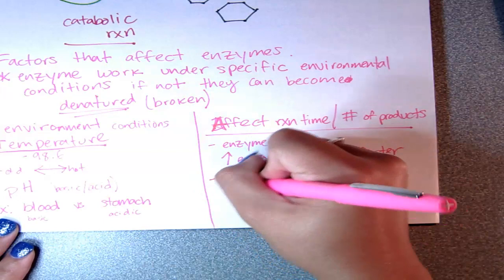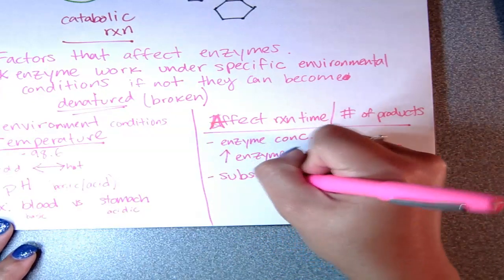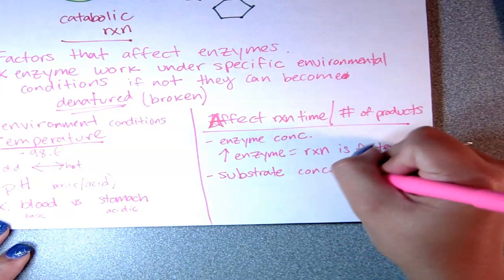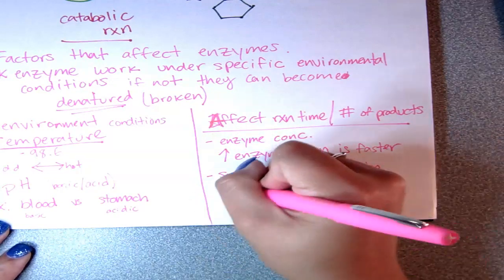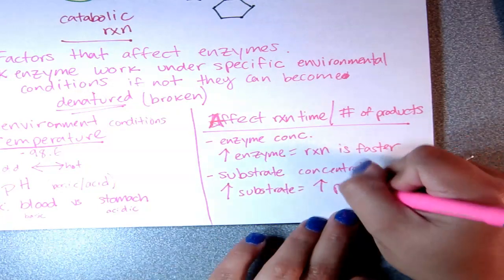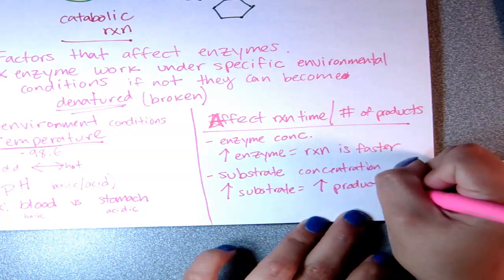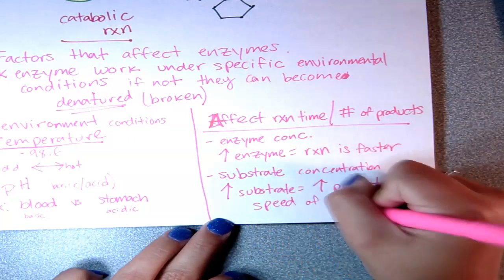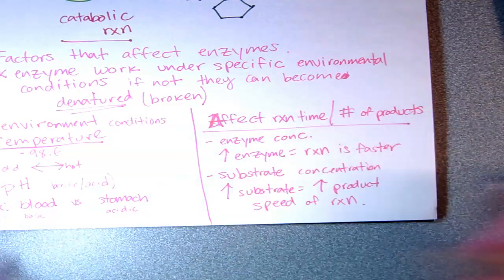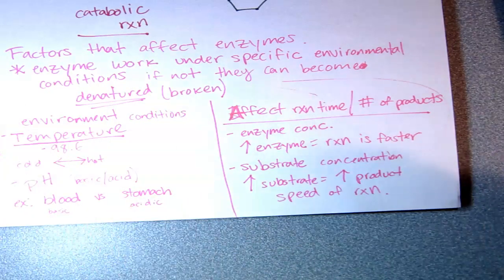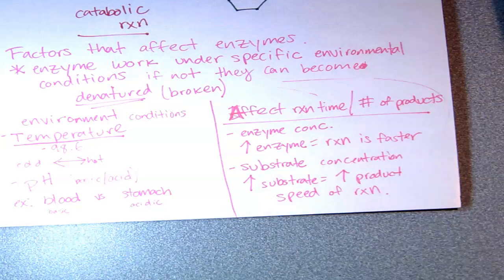Substrate concentration — how much stuff you have to work on — also matters. If you have a large number of substrates, you're going to have a large number of products, and this can also help speed up your reaction. We'll deal with this information more during the liver juice lab.